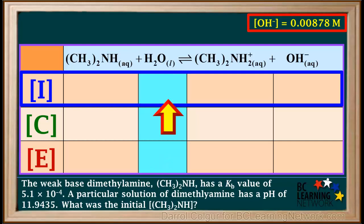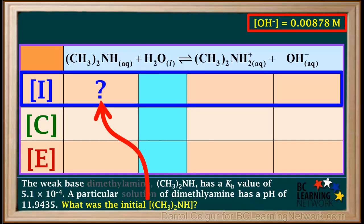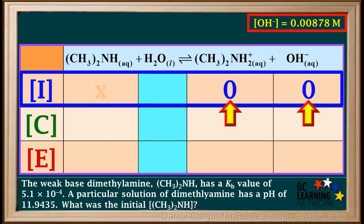Now we're ready to fill in the row for initial concentrations. What we're actually trying to find out in this problem is the initial concentration of dimethylamine — so that's our unknown. We'll let X equal the initial concentration of dimethylamine. The initial concentrations of (CH₃)₂NH₂⁺ and OH⁻ are both equal to zero. We have now finished filling in the row for initial concentrations.